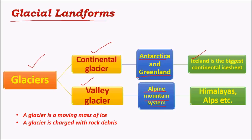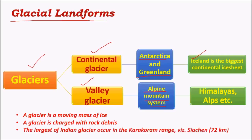Glaciers are charged with rock debris due to intense pressure and weight. The ice carries a lot of debris below it — huge rocks — which keep on striking against the lower strata, causing lot of wear and tear. There is a huge amount of debris which flows from the lower strata due to the pressure exerted by glaciers. One important glacier in India is the Siachen Glacier, which is on the border with Pakistan and China.